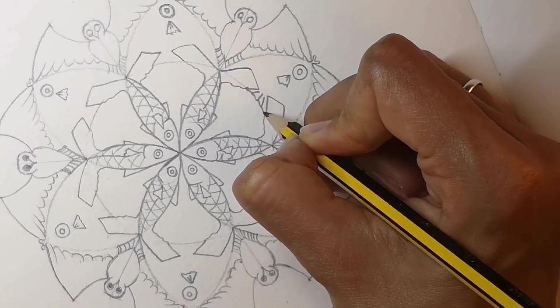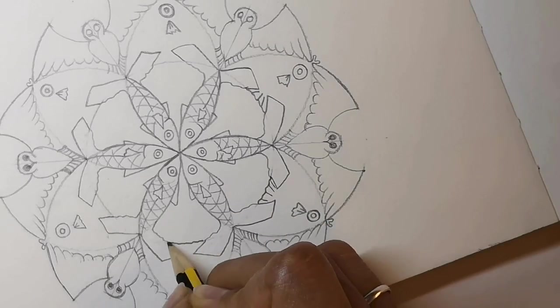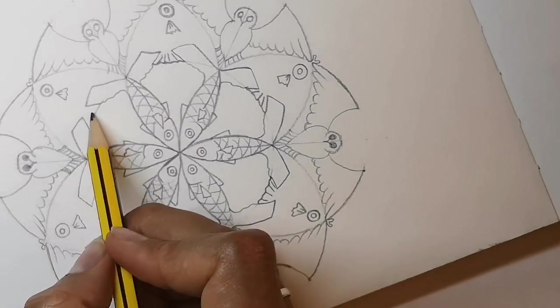And now the details on the angel fish's back fin or tail fin. Just simple lines to show the folds in the tail.